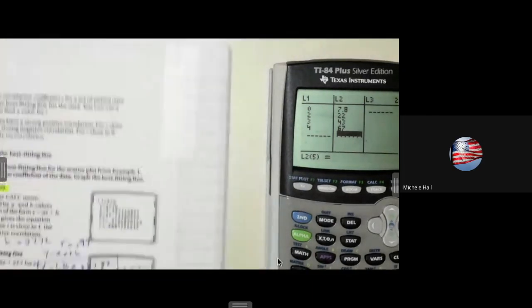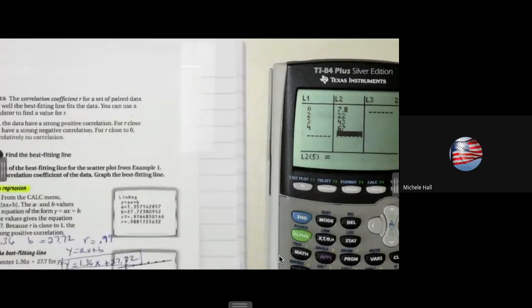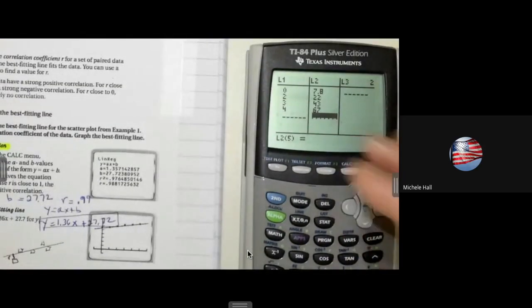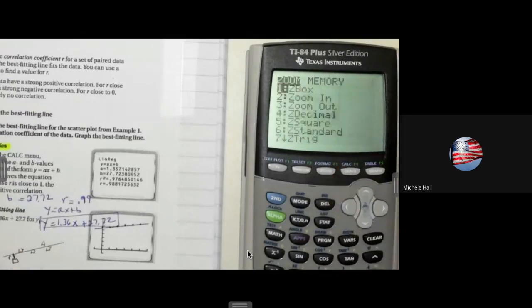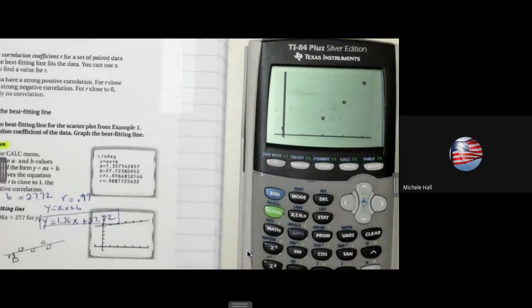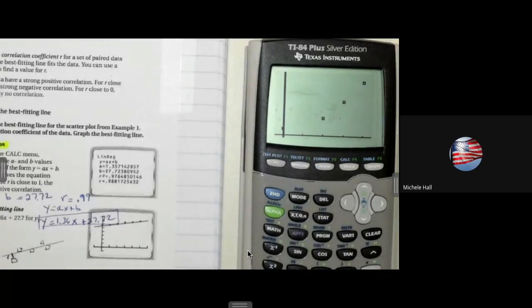Exactly, zoom nine, because we want to see the stat plot. So zoom number nine zooms in on my stats. Okay, so we have our stats. What's the next thing that we want to do after we have our stats zoomed in on?